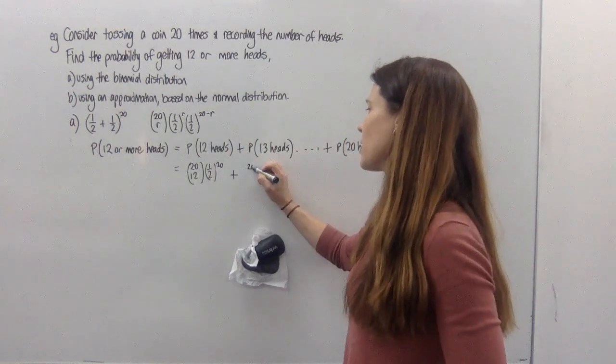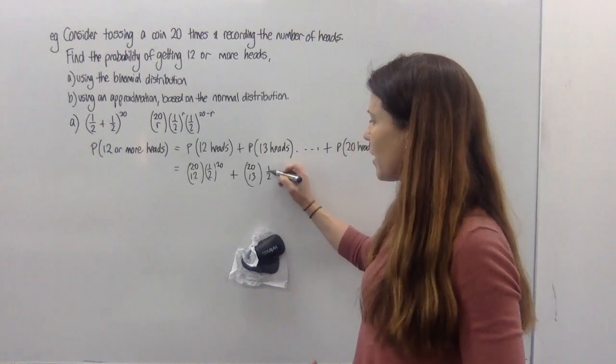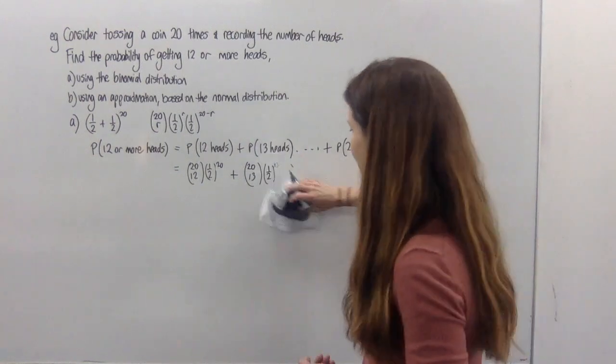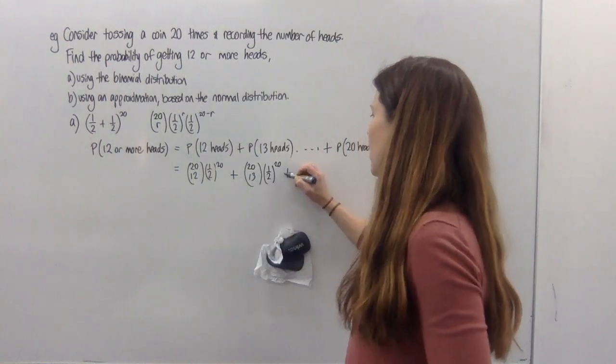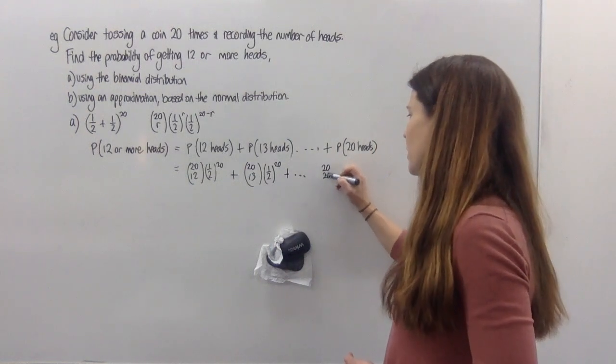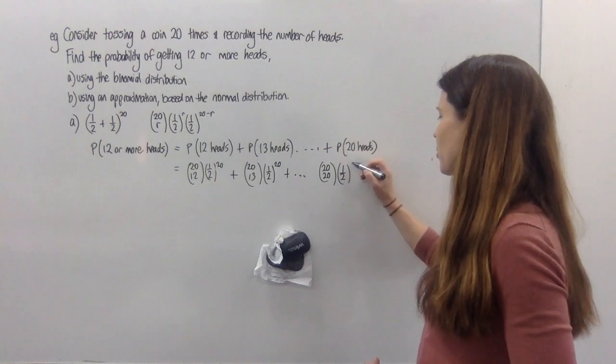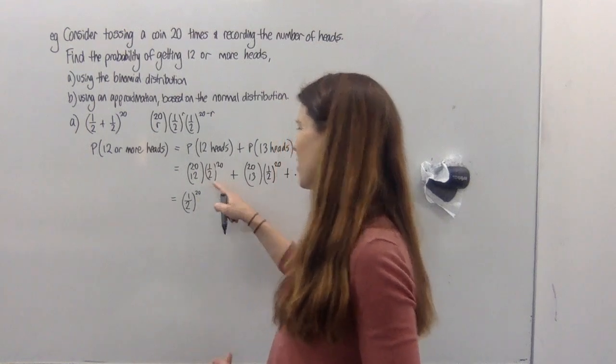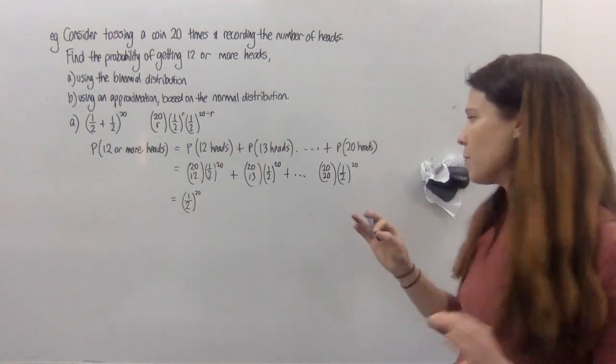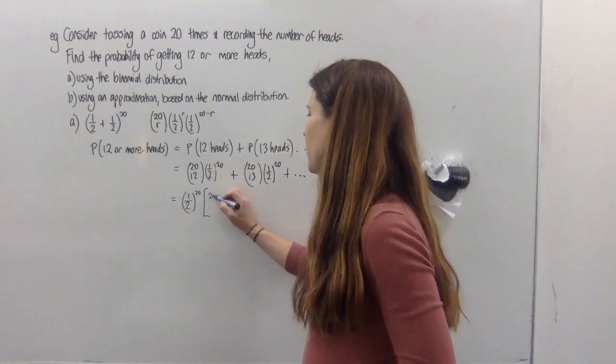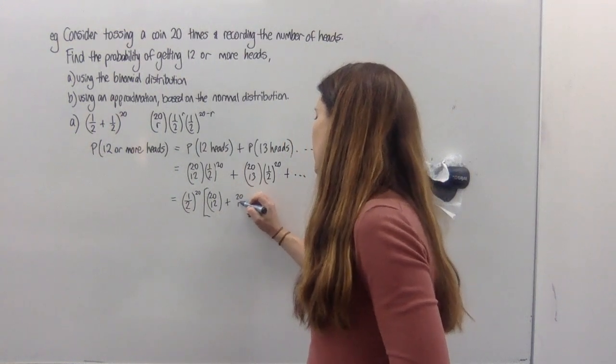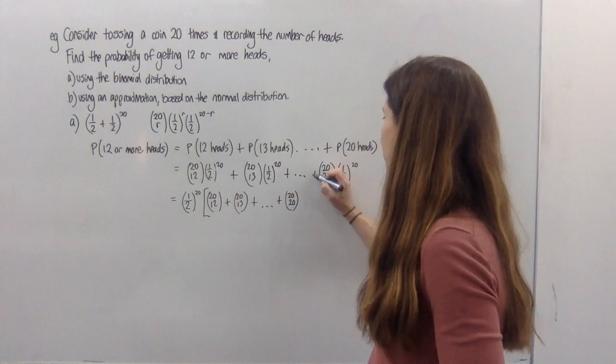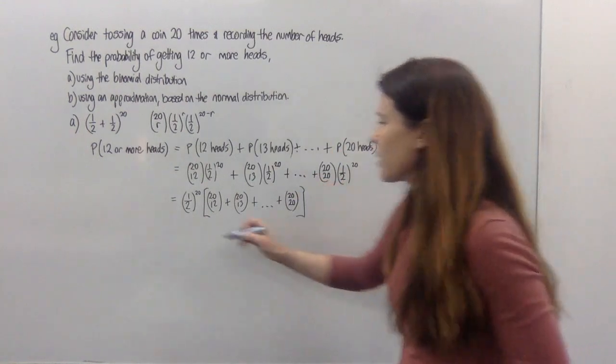For the next term, we'd have 20 choose 13. And see what would happen if we had half to the 13, but we also had half to the power of 7. We're going to get half to the power of 20 again. So let's tidy up and just write it that way. And we're going to continue this pattern all the way up to 20 choose 20. And it's also going to be half to the power of 20. So if we take half to the power of 20 out front, that really simplifies the calculation. Now, this is only going to happen when the chance of success and failure is equal. Inside our brackets, we're going to have 20 choose 12, plus 20 choose 13, plus 20 choose 14, etc, all the way up to 20 choose 20.